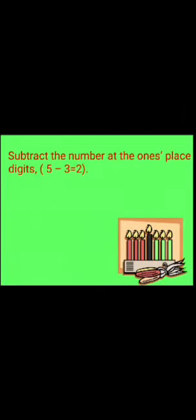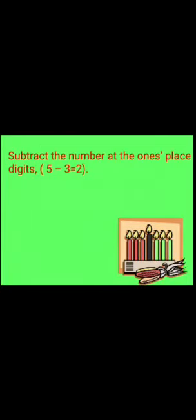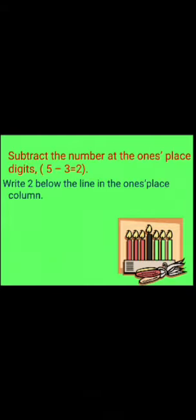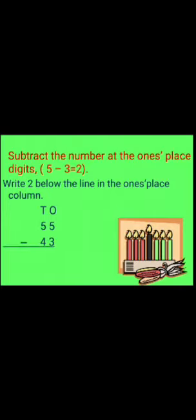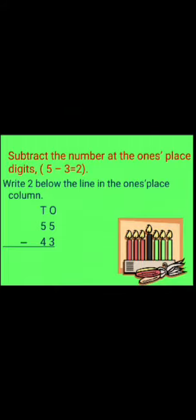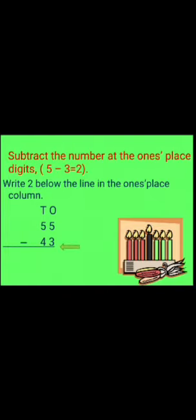Next step is: subtract the number at the ones place digits. In this question, we have 55 and 43. At ones place, we have 5 and 3. When we subtract 3 from 5, we get answer 2. Now, we will write this answer below the line in the ones place column.